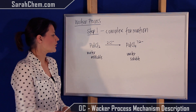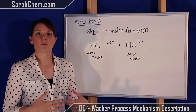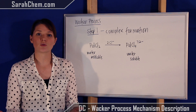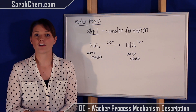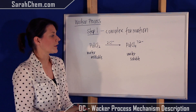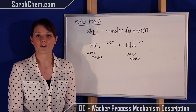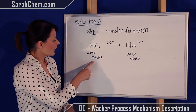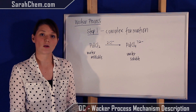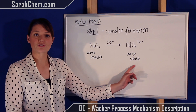In the first step, we're going to take PdCl₂ and convert it to PdCl₄. What's going to happen is we'll have a lot of Cl⁻ in solution that will coordinate additionally to the palladium. Palladium starts coordinated to two Cl⁻ ions and will now be coordinated to four. The solvent used is water — PdCl₂ is water insoluble, but PdCl₄ is water soluble, so it can participate in the aqueous solution.